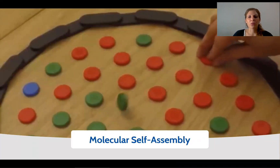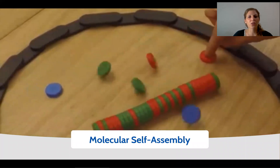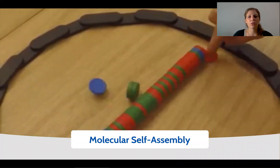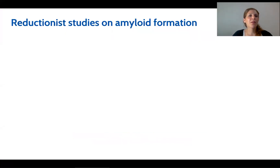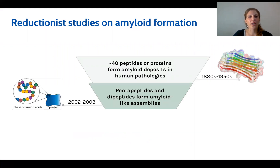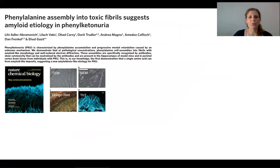Molecular self-assembly is the spontaneous association of molecules through non-covalent bonds into stably structured and well-defined aggregates. The self-assembly process can lead to the formation of a class of assembly called amyloid structure. The minimal building block for the formation of amyloid was originally found to be protein, but over the last two decades it was found that peptides can also form this structure, and it was found in our lab in the last decade that also single amino acids can form amyloid-like structures.